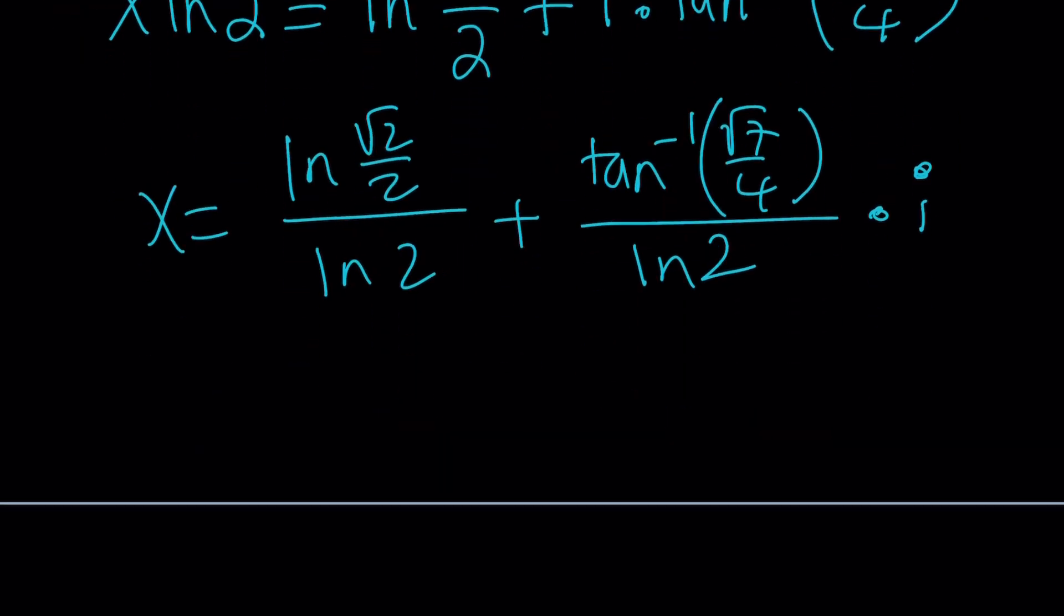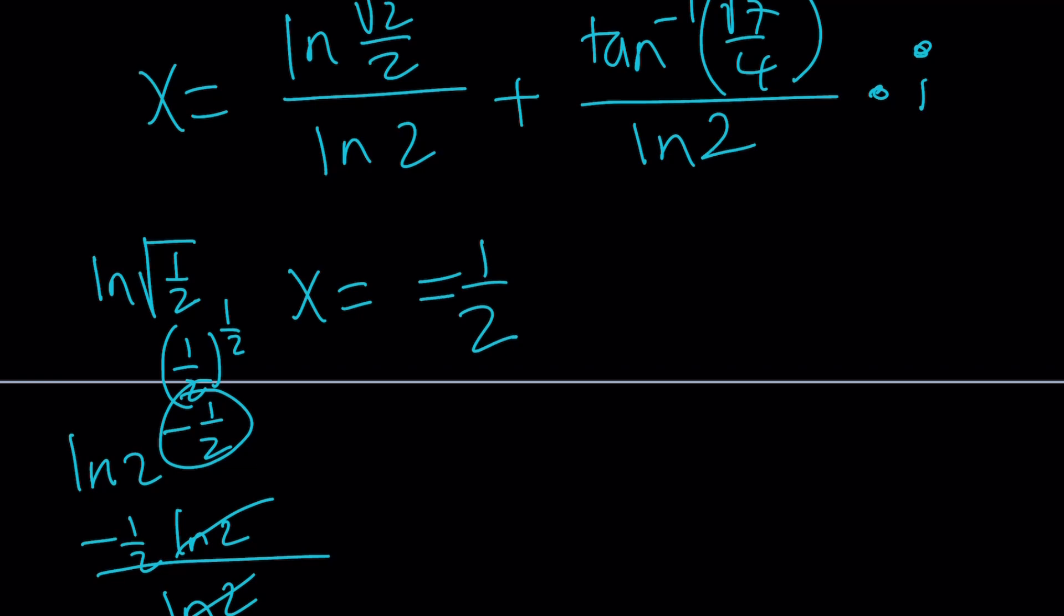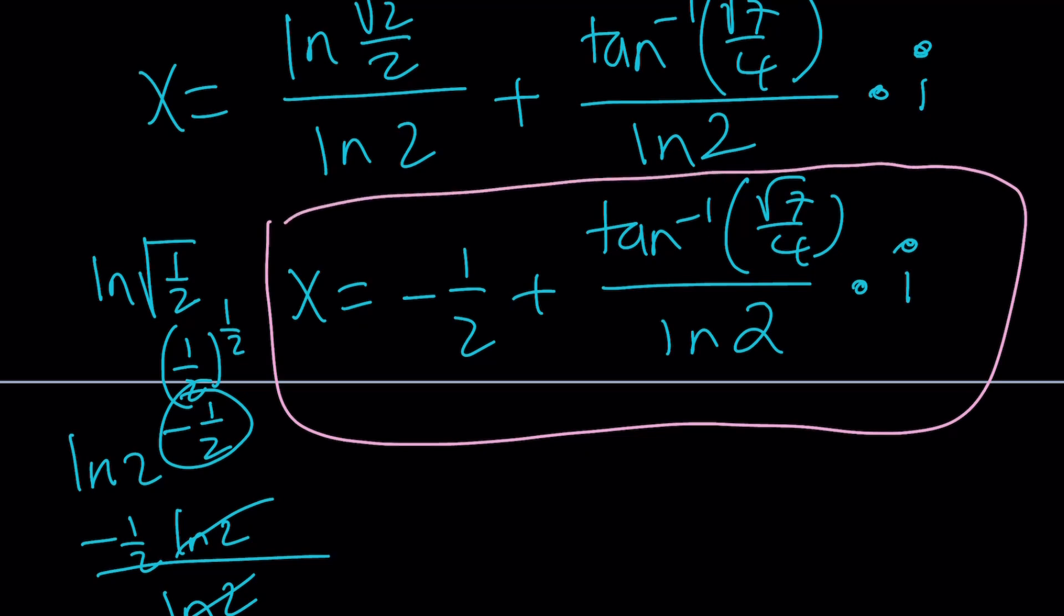And then this is going to become tan inverse root 7 over 4 divided by ln 2 times i. And obviously, ln root 2 over 2 is kind of like the square root of 1 over 2. So think about it this way: ln square root of 1 half is actually going to be 1 half to the power 1 half, which is 2 to the power negative 1 half. When you ln this, it's going to become negative 1 half times ln 2. When you divide by ln 2, they're going to cancel out. So this is going to leave us with negative 1 half. Let me rewrite it. x equals negative 1 half plus tan inverse root 7 over 4 divided by ln 2 multiplied by i. So the real part of the answer is just going to be negative 1 half. Think about what would happen if you didn't have an imaginary part. And this brings us to the end of this video.